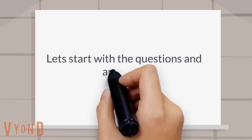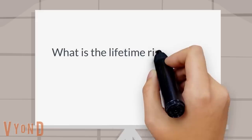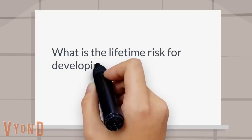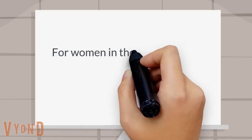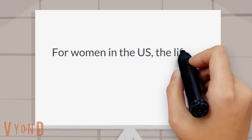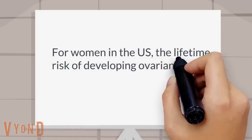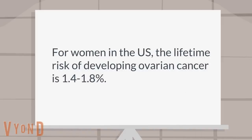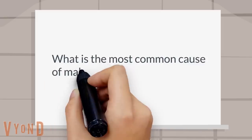Let's start with the questions and answers. What is the lifetime risk for developing ovarian cancer in the U.S.? For women in the U.S., the lifetime risk of developing ovarian cancer is 1.4 to 1.8 percent.